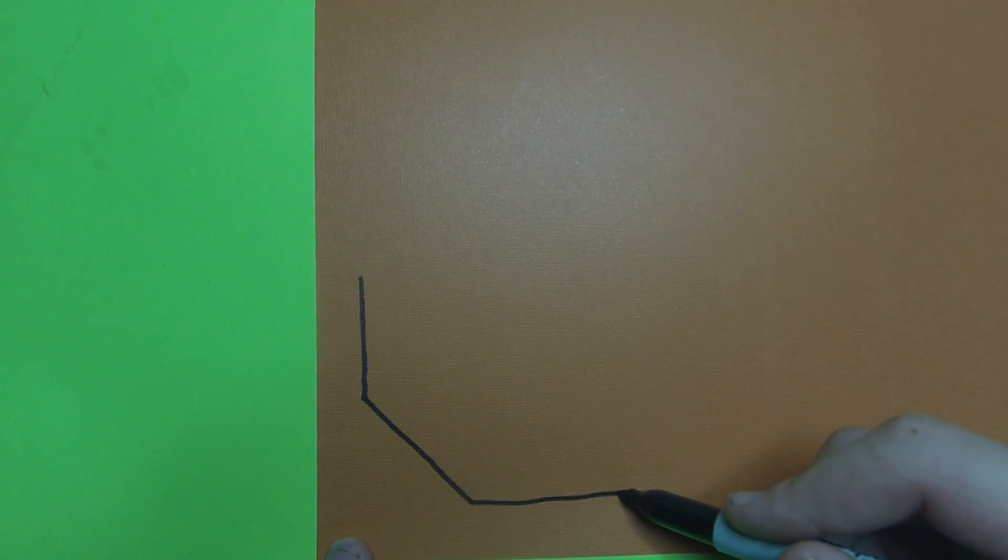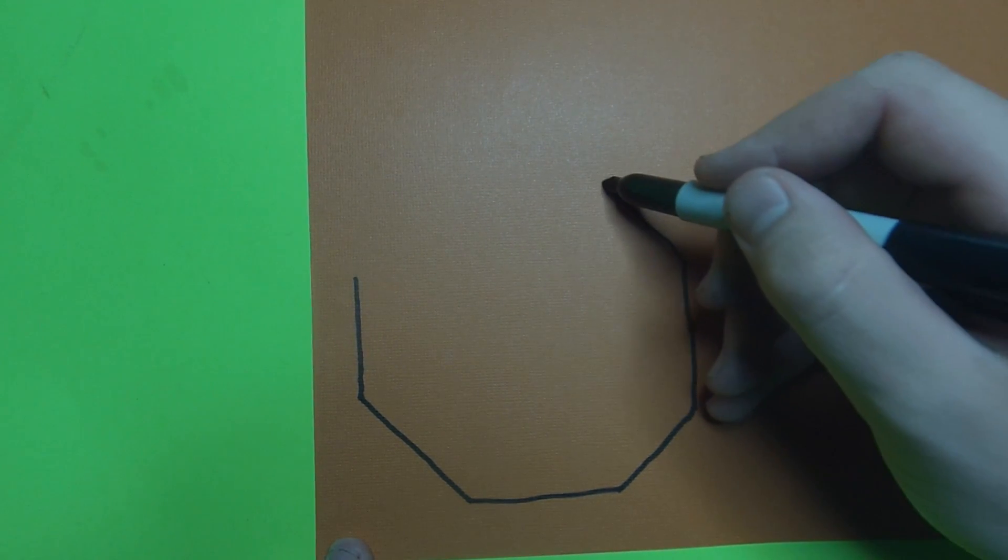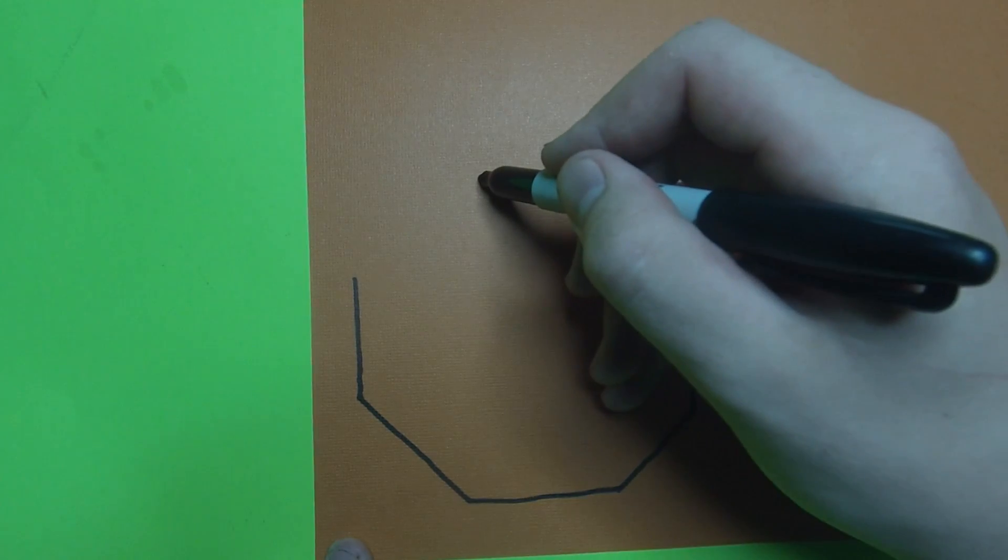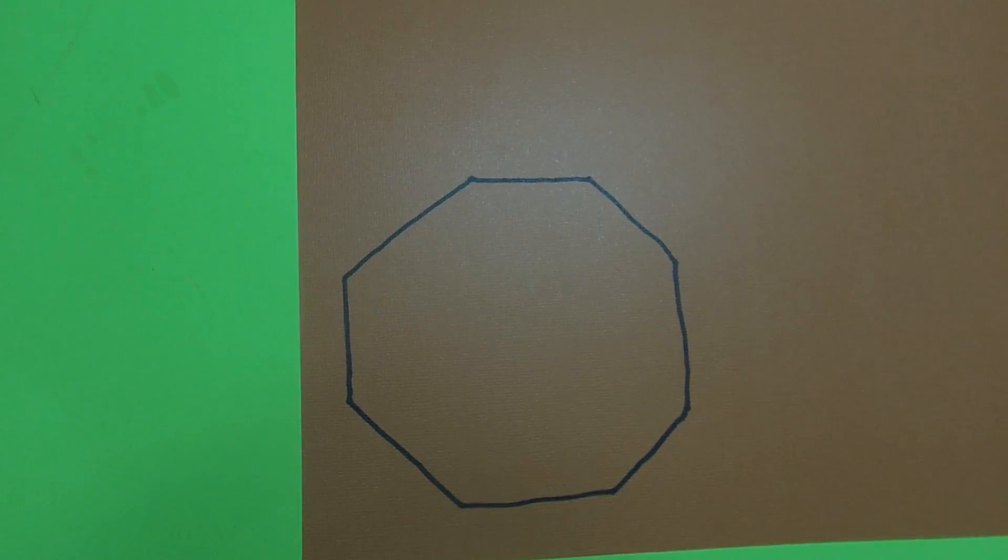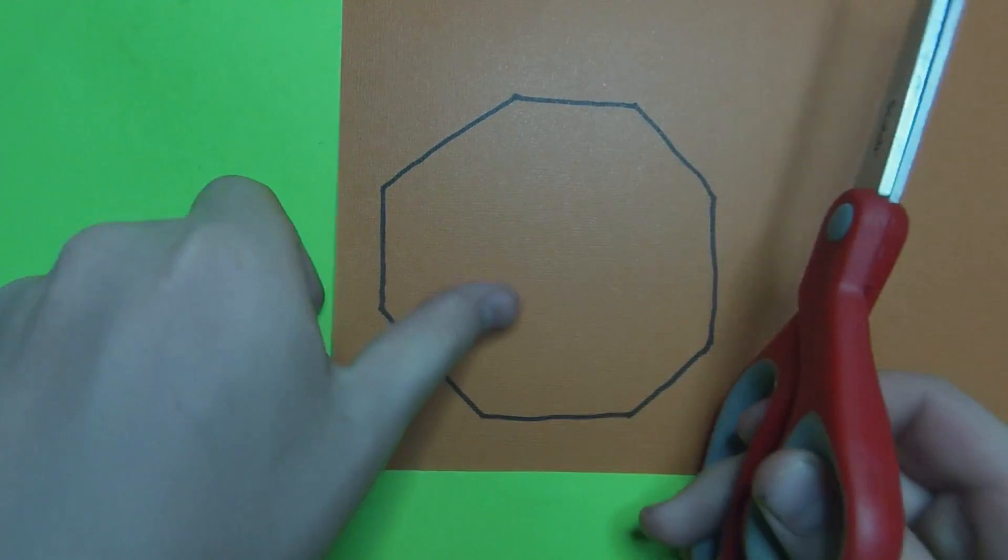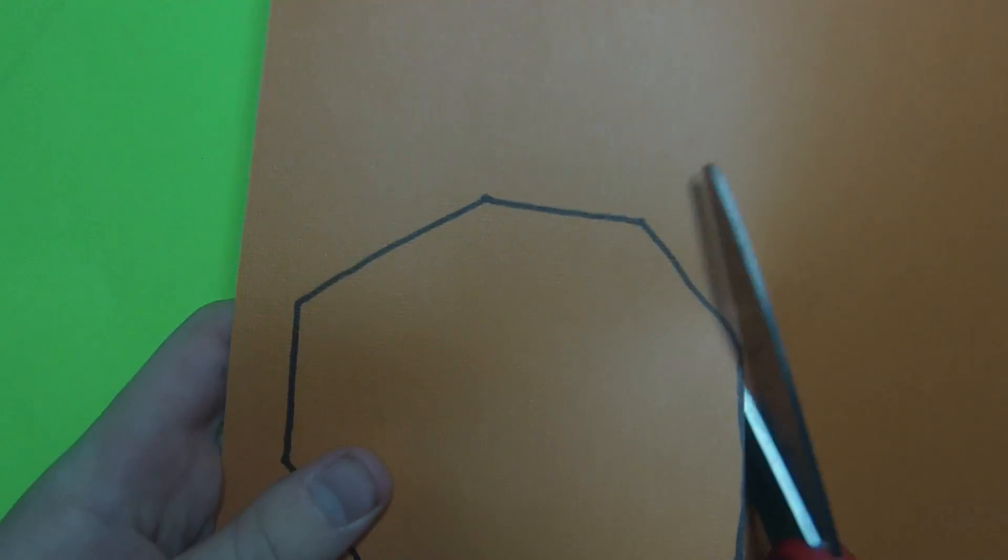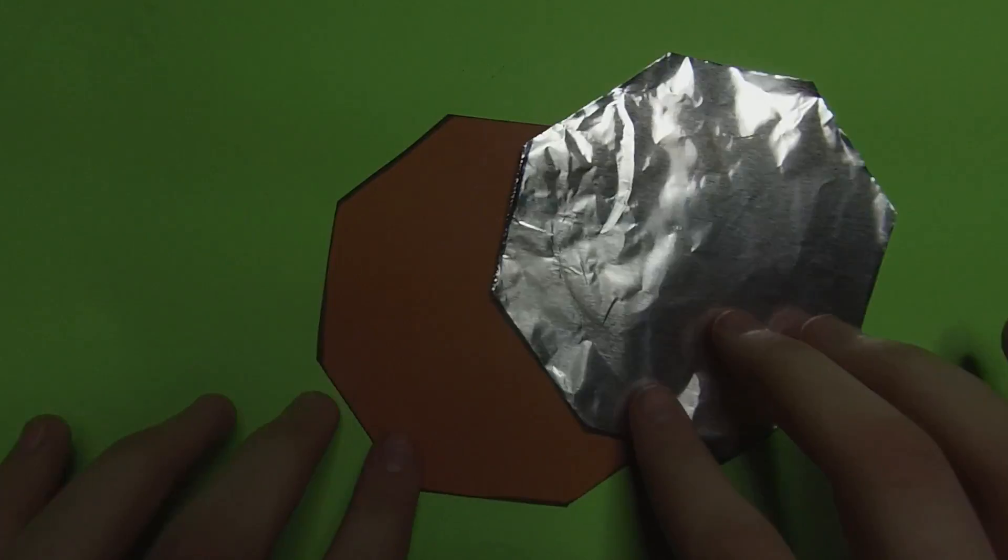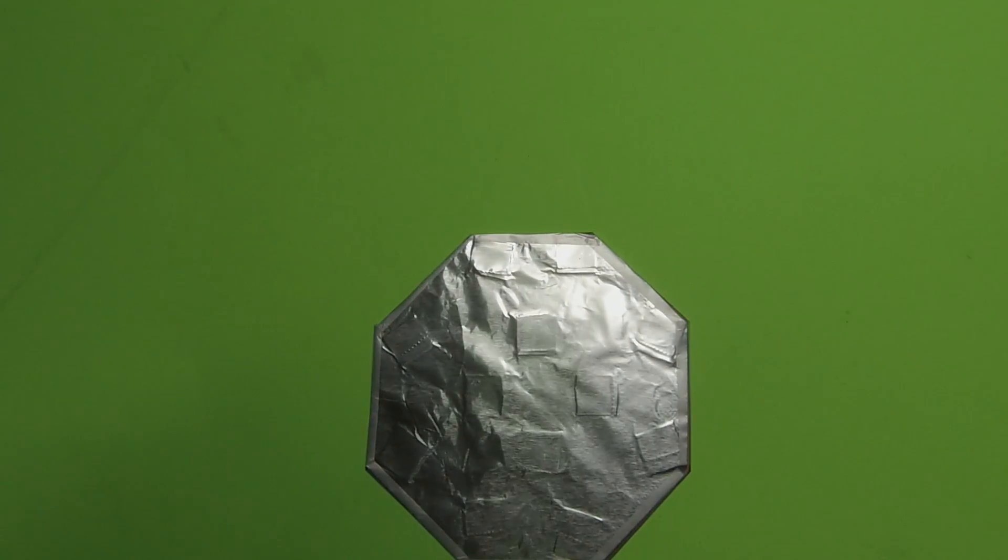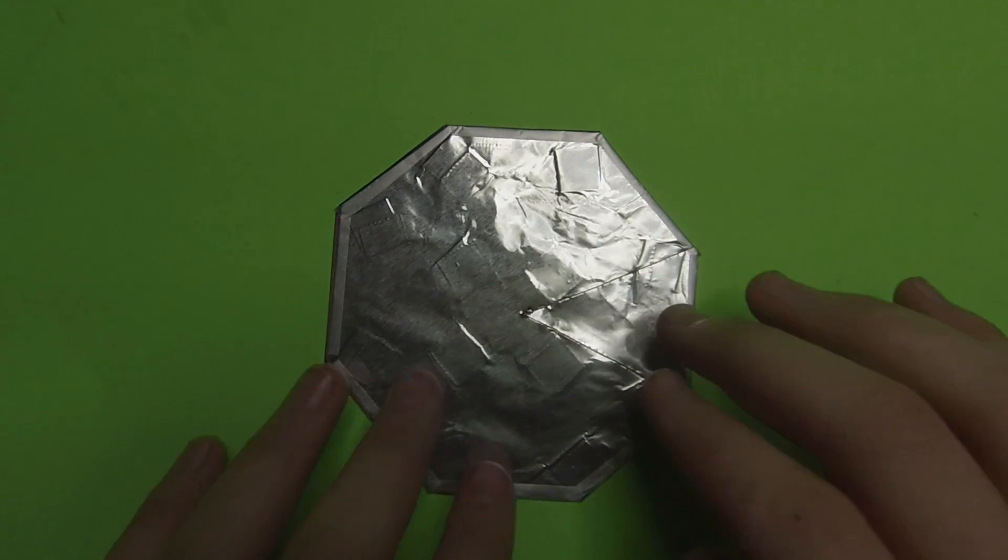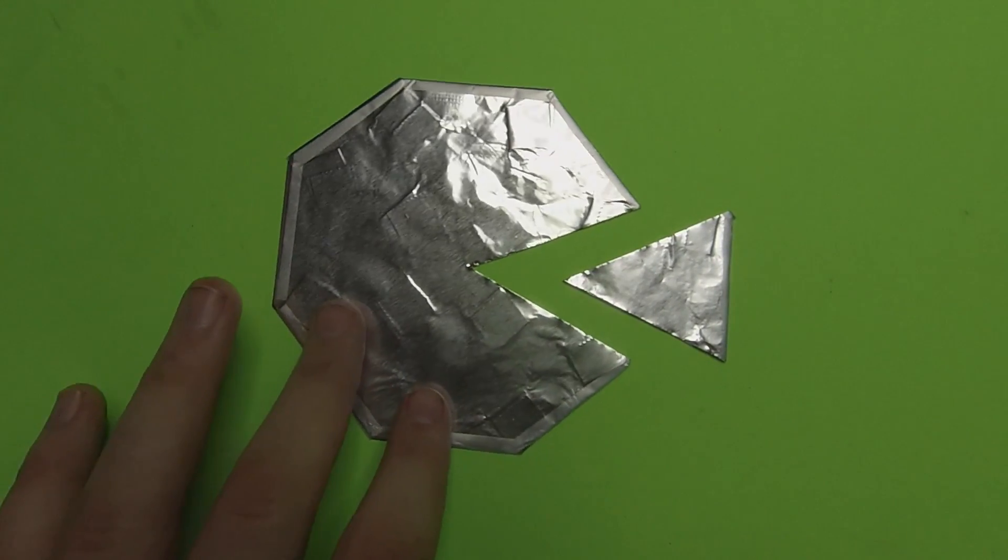Next, you will need to draw an octagon on the piece of paper. And just so you know, an octagon is the same shape that the stop sign is, so I'm sure everyone will see that. Next, you will need to cut it out with a pair of scissors. Then you also have to cut out the same shape with the aluminum foil. And then what I did was I taped it all together. And then I cut out a triangle piece, so it should kind of look like Pac-Man when you're done.